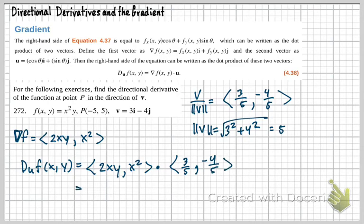And we're just going to dot those. And remember, dot product, I multiply component wise and then add. So 6 fifths XY minus 4 fifths X squared. So that's our directional derivative.